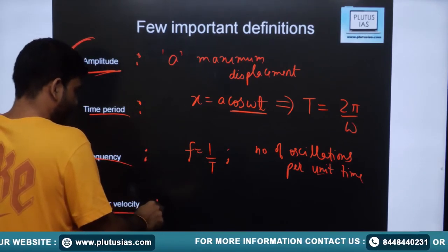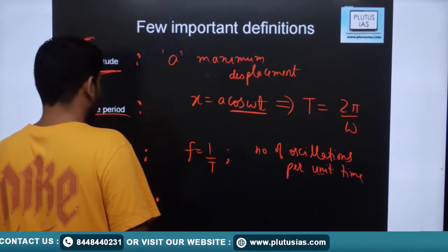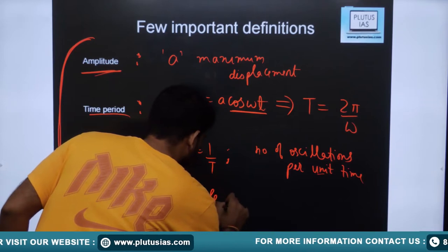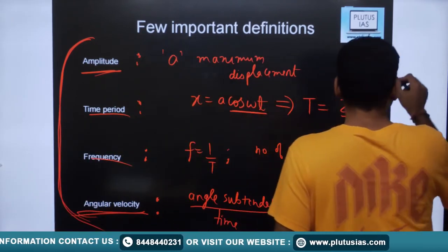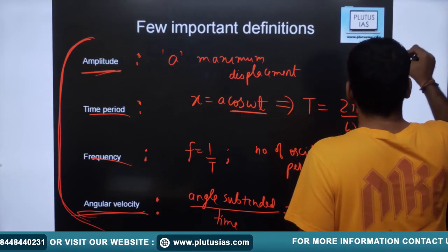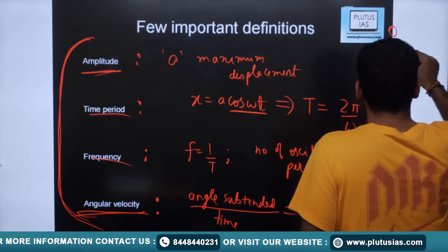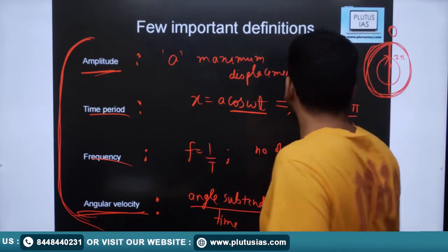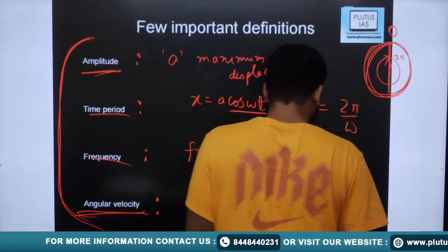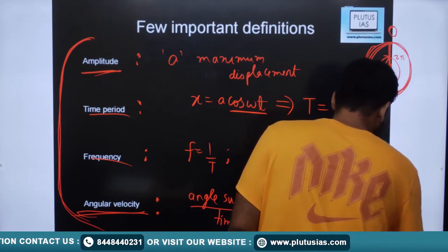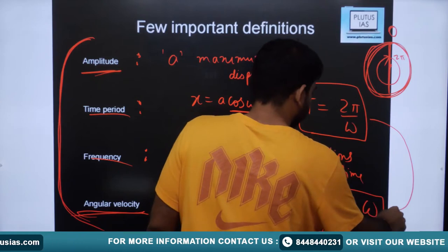Angular velocity ω is the angle subtended per unit time — the rotational analogue of linear velocity. In one complete oscillation, the angle subtended is 2π. The time taken to cover one cycle is the time period T. So angular velocity ω = 2π/T. Interestingly, this is the same equation we derived for time period from the cosine function: T = 2π/ω. These are the same relation.